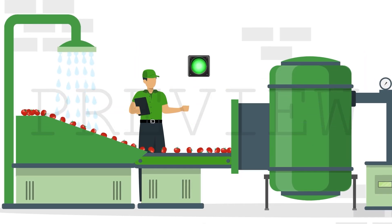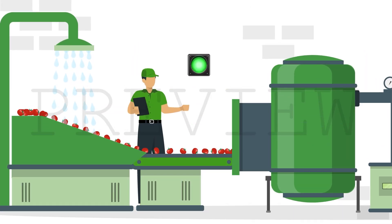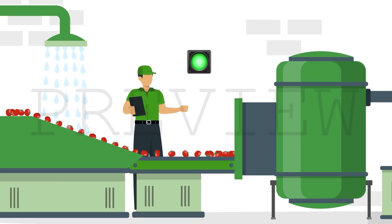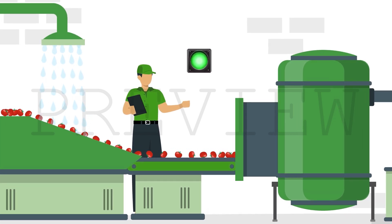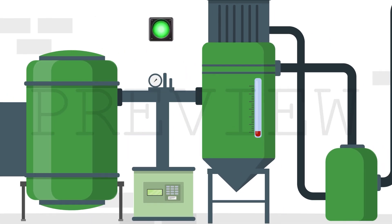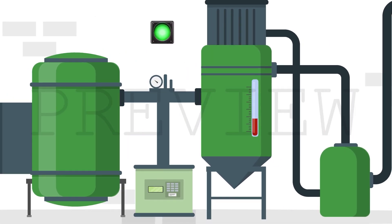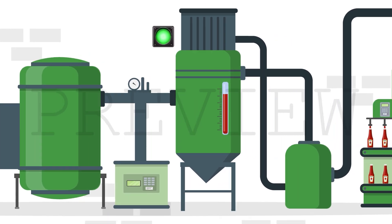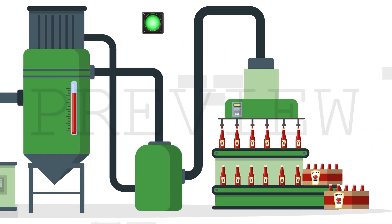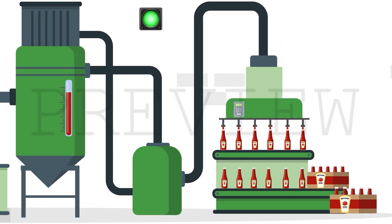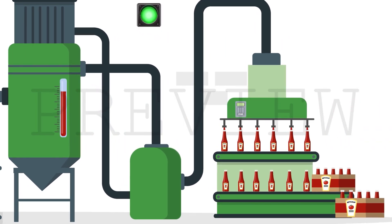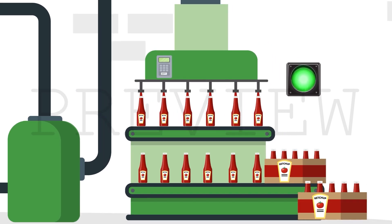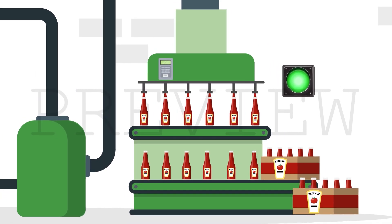Continuous Manufacturing is a production method where materials pass through an end-to-end process, from raw material to finished product, without stopping. It enables businesses to specialize in creating large quantities of products with few variations.